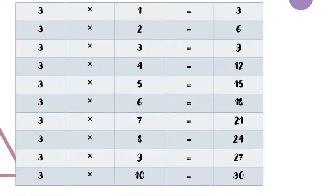Let's revise the whole table again. Three twos are six, three threes are nine, three fours are twelve, three fives are fifteen, three sixes are eighteen, three sevens are twenty-one, three eights are twenty-four, three nines are twenty-seven, three tens are thirty.